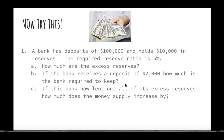Let's give this a shot. A bank has a deposit of $100,000 and holds $10,000 in reserves. The required reserve ratio is 5%. A: how much are the excess reserves? B: if the bank receives a deposit of $2,000, how much is the bank required to keep? C: if this bank lent out all of its excess reserves, by how much does the money supply increase totally? Pause the video, see what you think, and then play it again.